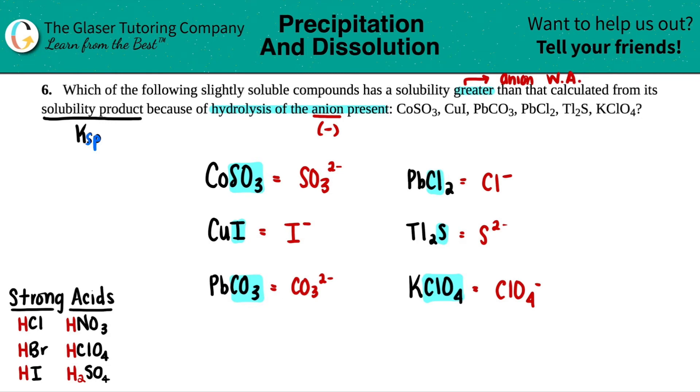Because what's going to happen is all the anions that form a weak acid, they're going to react with water. That's what hydrolysis is, reacting with water. And what's going to happen is the anions of the weak acids are going to pull from the solid. So you would have to produce more, or you'd have to break down more solid, making that solubility greater.